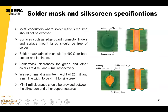For solder mask, a small amount is allowed to go into the hole. You can also use a plug — a two-step solder mask process where we first apply a small amount of solder mask into the via, then apply solder mask over the entire via, so it's completely covered rather than half on, half off.